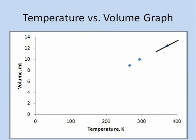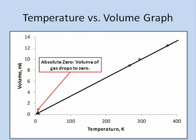Now look what happens when we draw the best straight line through the three data points. We get a line that extends back to the origin of the graph. At this point, we have a temperature of 0 kelvin and a volume of 0 milliliters.